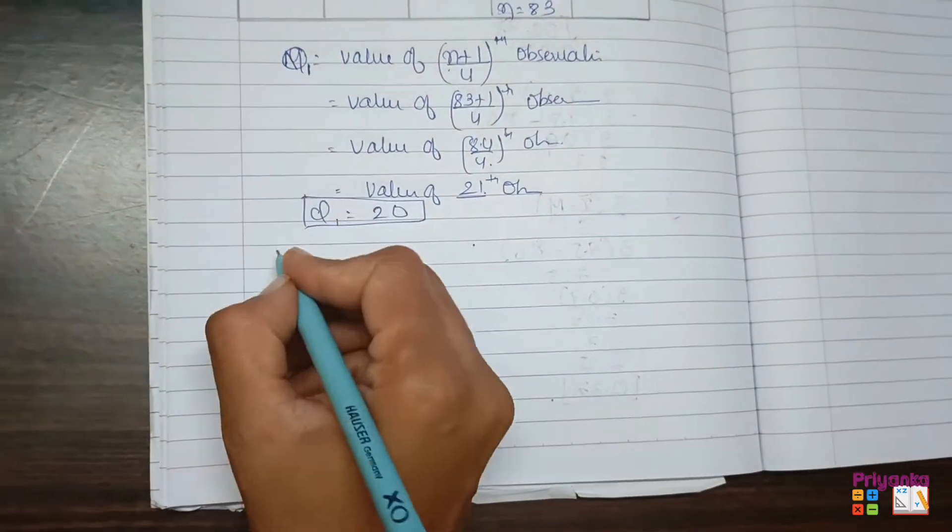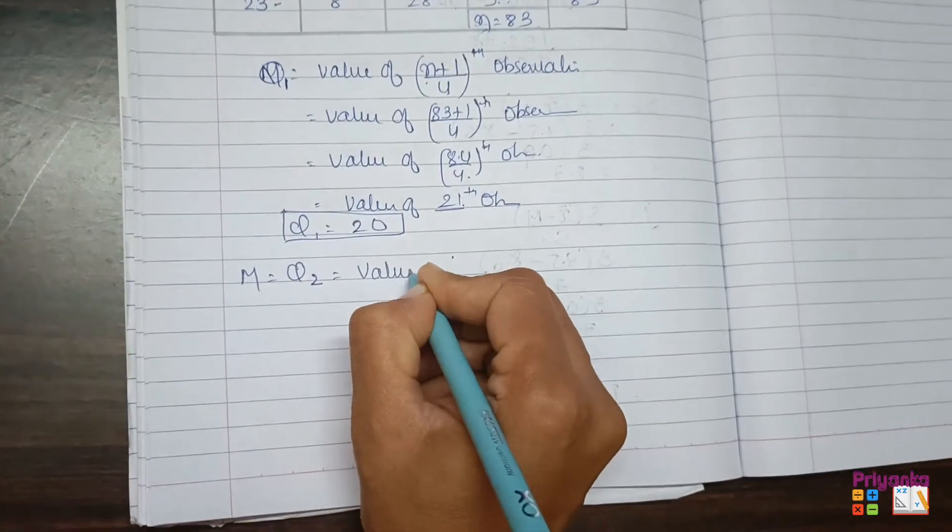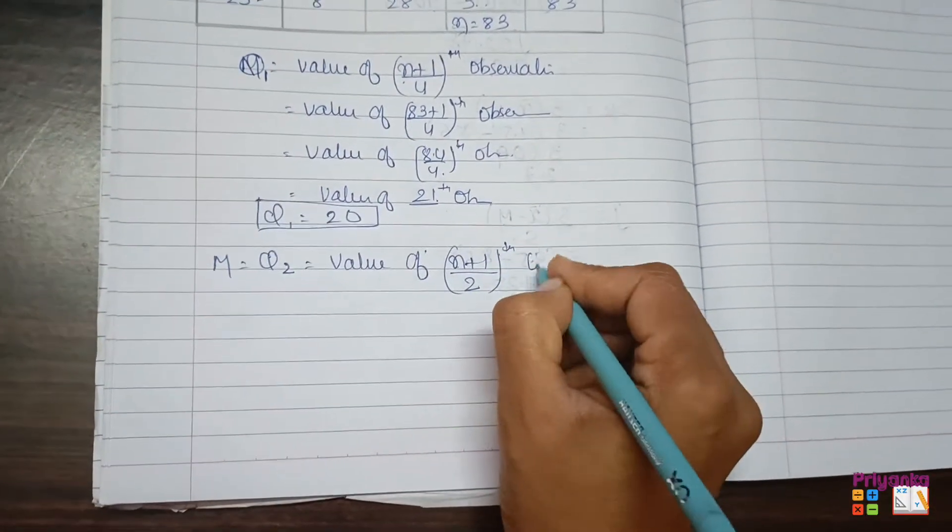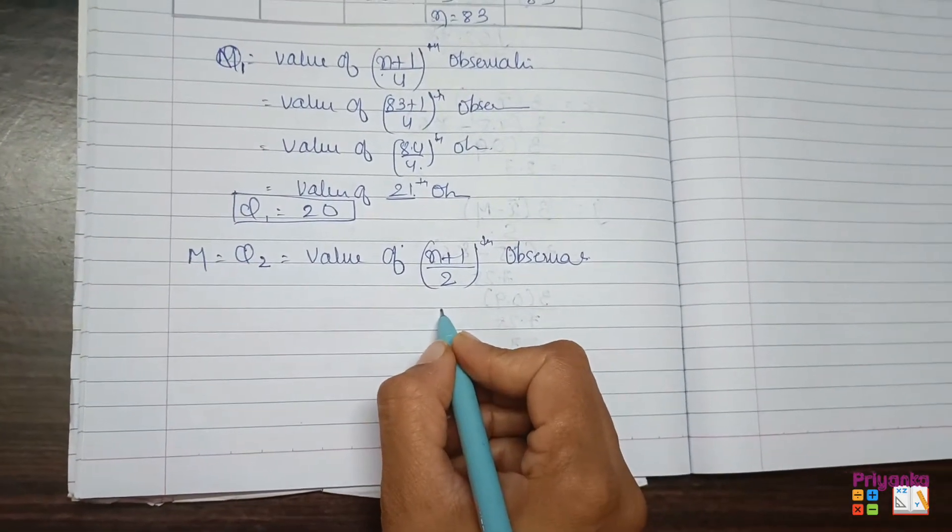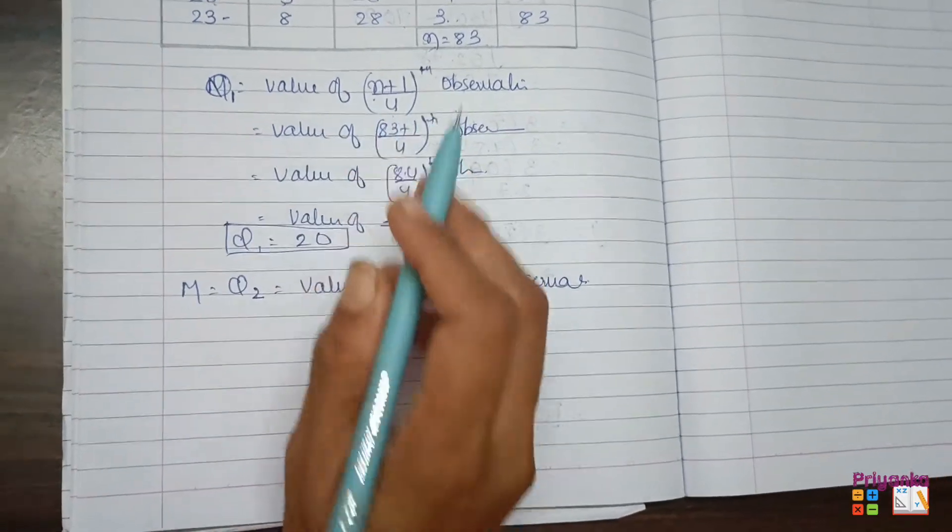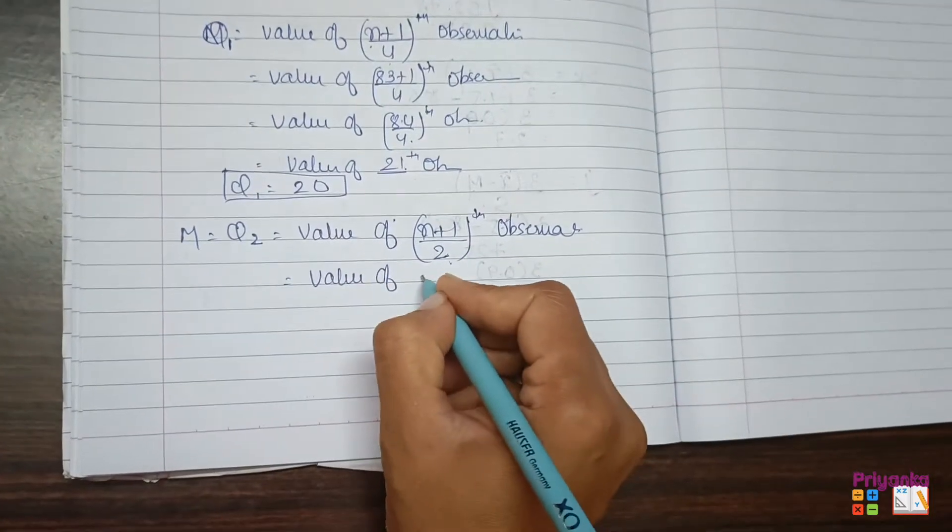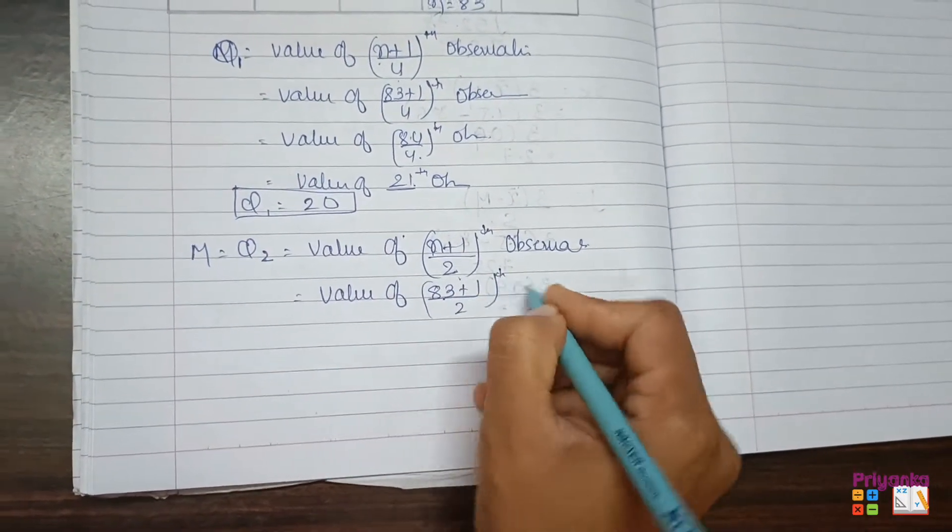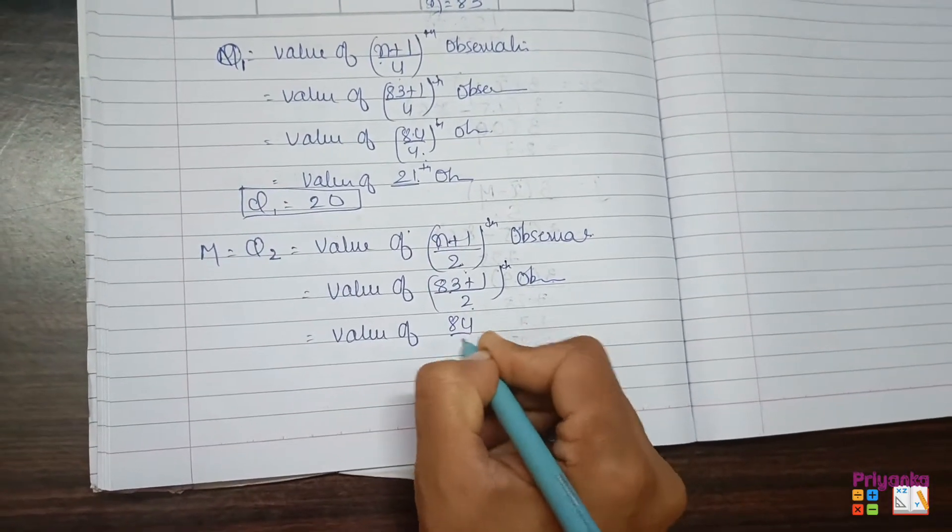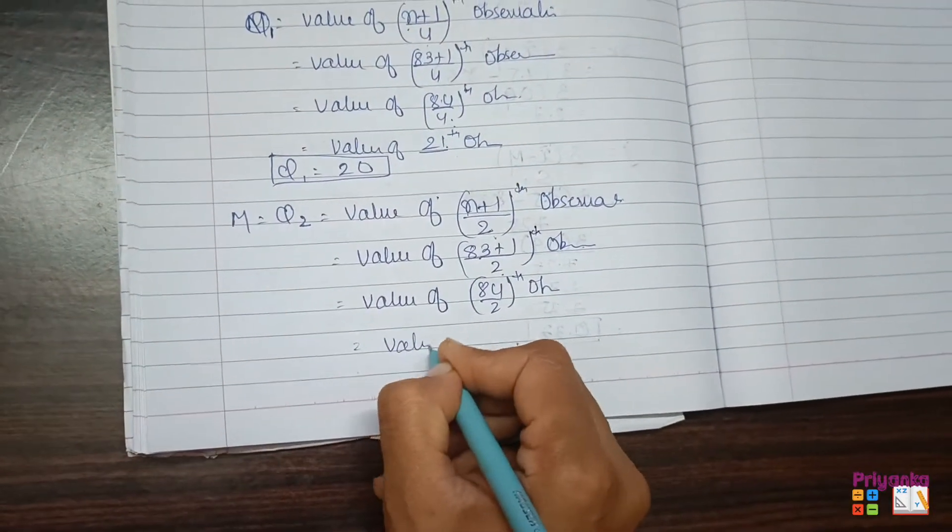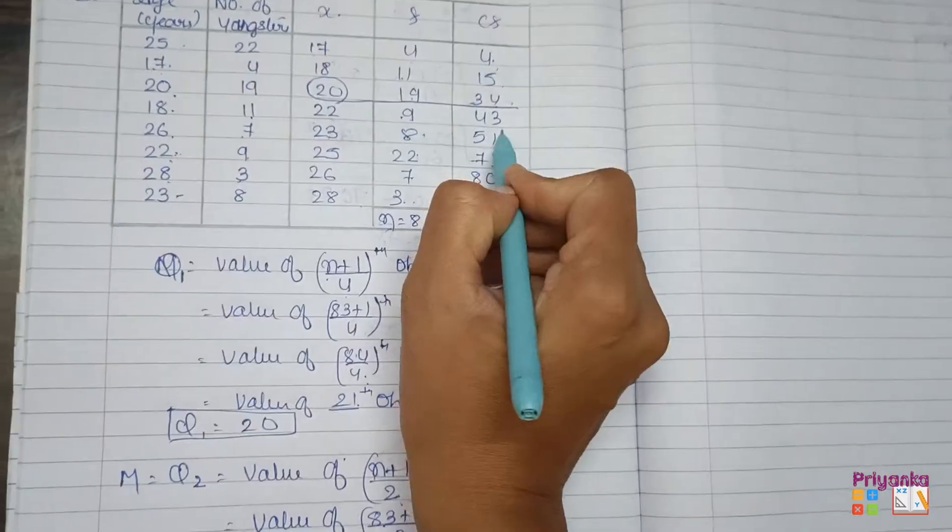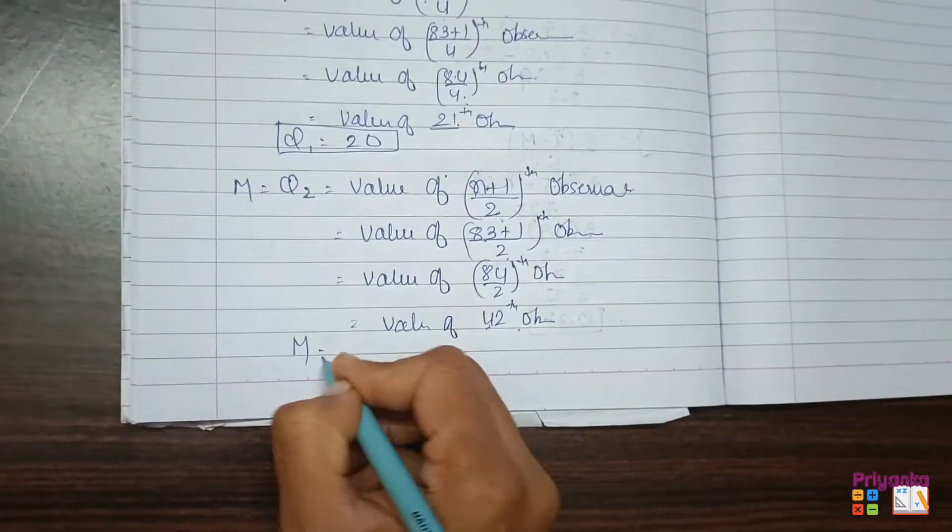Next we'll find out median which is equal to your Q2. So here we find out median which is equal to your Q2. n plus 1 divided by 2th observation. Don't copy it out. Because here we divided by 4th, here we divide by 2th. So value of 84 divided by 2th observation, which will be 42th observation. Now 42 number, go to CF and check where it comes, so this number is visible at 43. So here our median is 22.